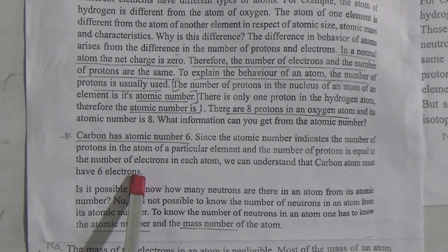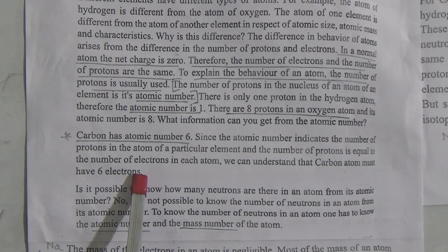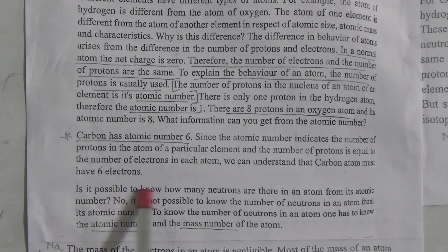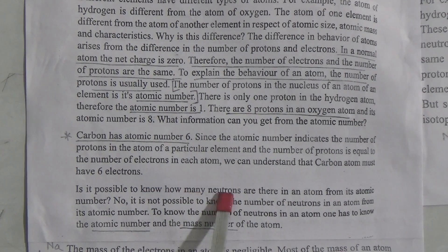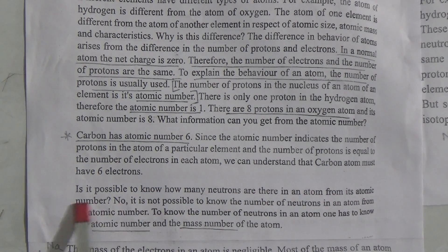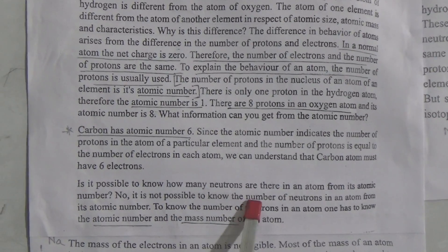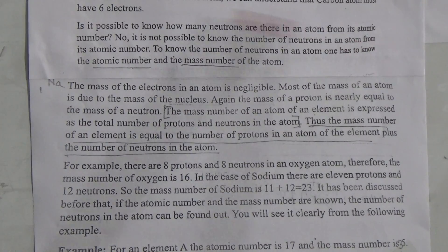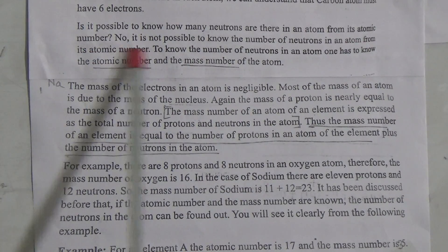The atomic number shows the number of protons of an atom, and the number of protons and number of electrons are always the same. So if carbon has the atomic number 6, there will be 6 protons and also 6 electrons. Is it possible to know how many neutrons are in an atom from its atomic number? No, it is not possible to know the number of neutrons in an atom from its atomic number alone.